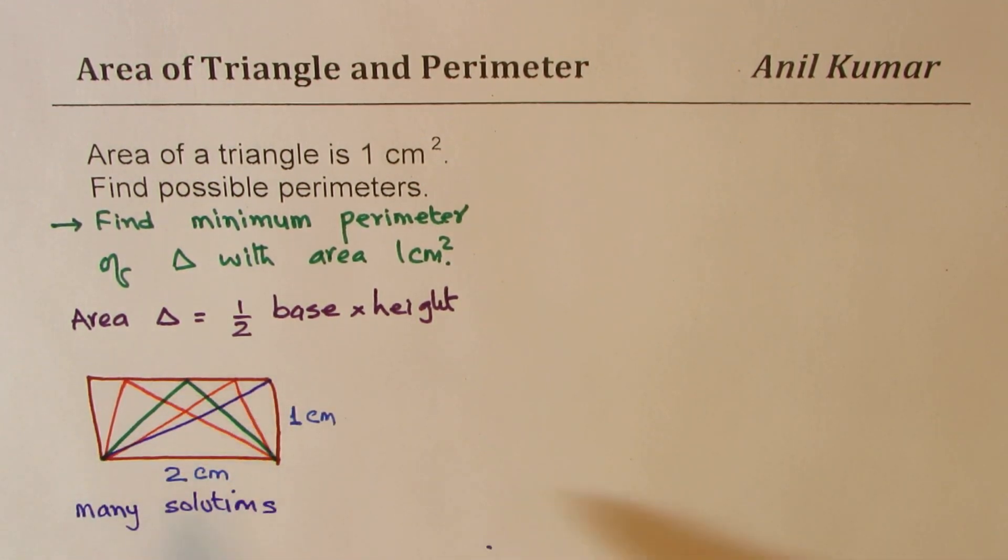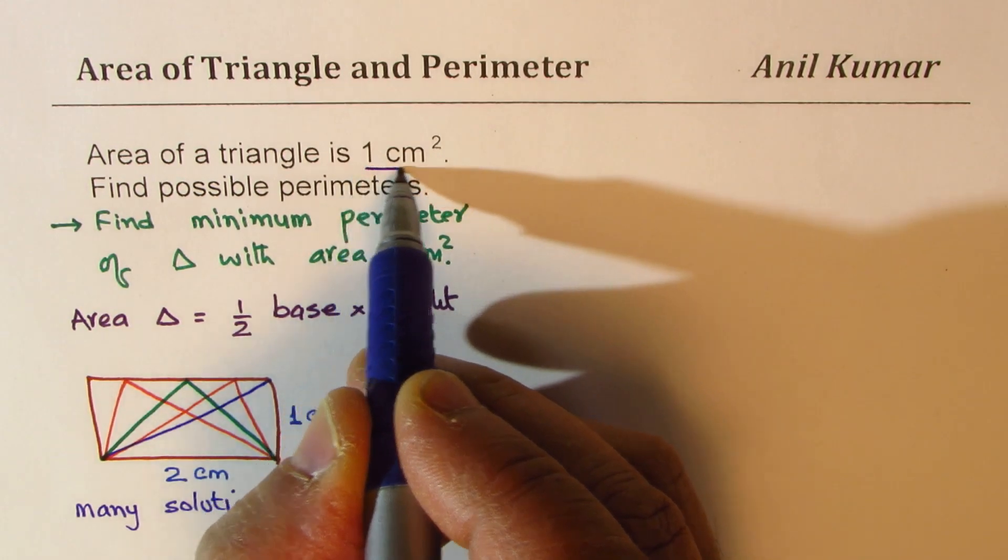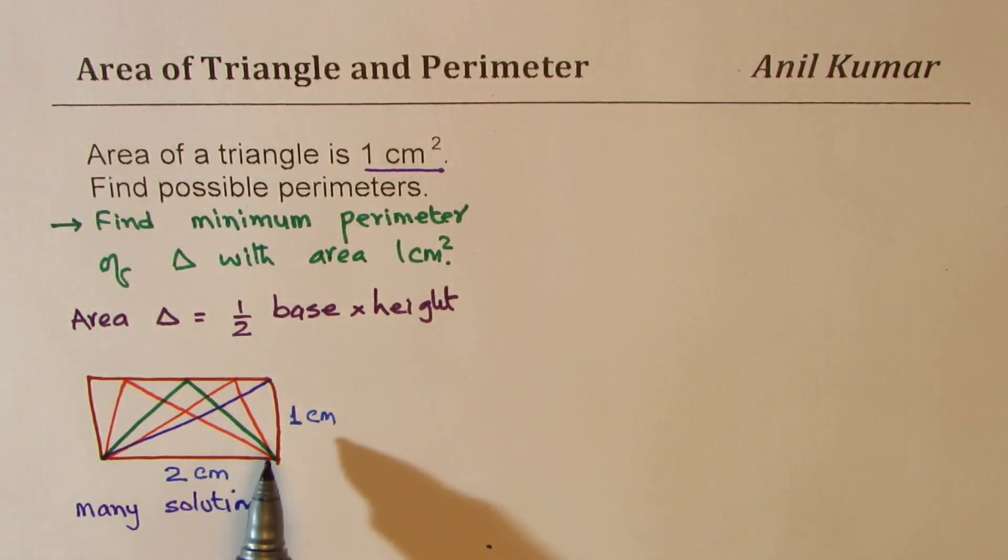What you see here is that there are many solutions. All triangles shown here have area of one centimeter square, since they are within a rectangle whose area is two centimeters square with same base and height.